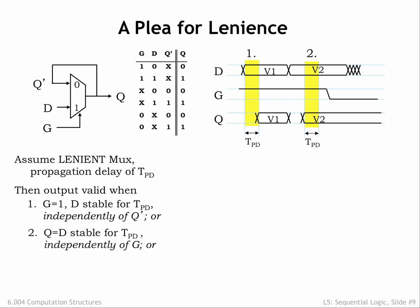Condition 2: if both Q and D are valid and stable for TPD, the Q output will be unaffected by subsequent transitions on the G input. This is the situation that allows us to have a 1 to 0 transition on G without contaminating the Q output. Condition 3: if G is low and Q has been stable for at least TPD, the output will be unaffected by subsequent transitions on the D input.